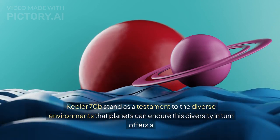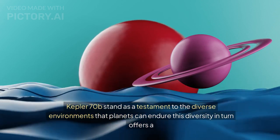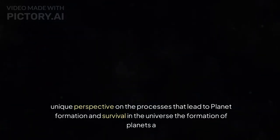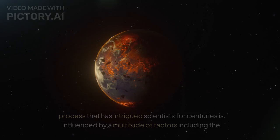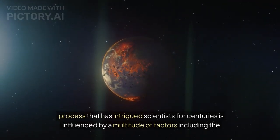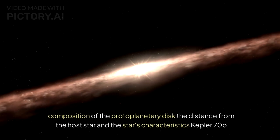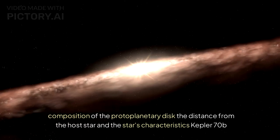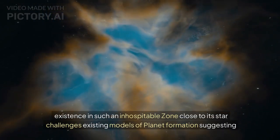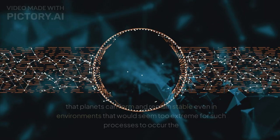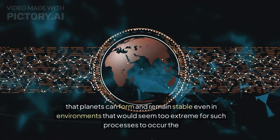The extreme conditions found on Kepler-70b stand as a testament to the diverse environments that planets can endure. This diversity offers a unique perspective on the processes that lead to planet formation and survival in the universe. The formation of planets is influenced by a multitude of factors, including the composition of the protoplanetary disk, the distance from the host star, and the star's characteristics. Kepler-70b's existence in such an inhospitable zone challenges existing models of planet formation, suggesting that planets can form and remain stable even in environments that would seem too extreme.